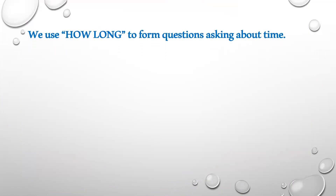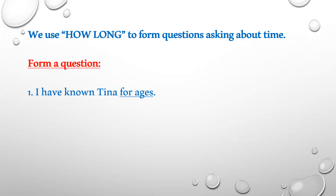If you want to ask a question, 'since' and 'for' come in affirmative sentences. To form a question asking about a period of time or the starting time, we use 'how long.' For example, take the sentence: 'I've known Tina for ages.' The underlined part is 'for ages,' and we form the question using 'how long' in the present perfect because the answer is in the present perfect.